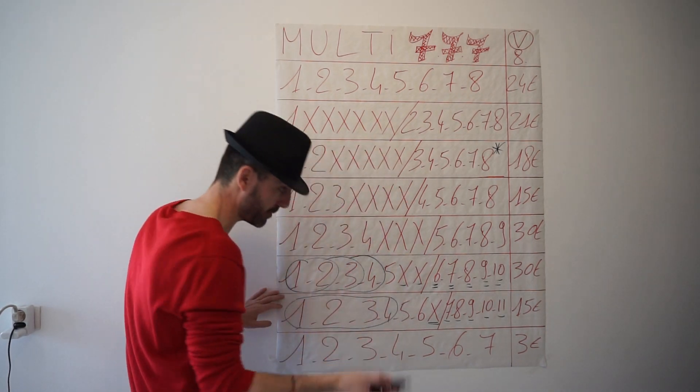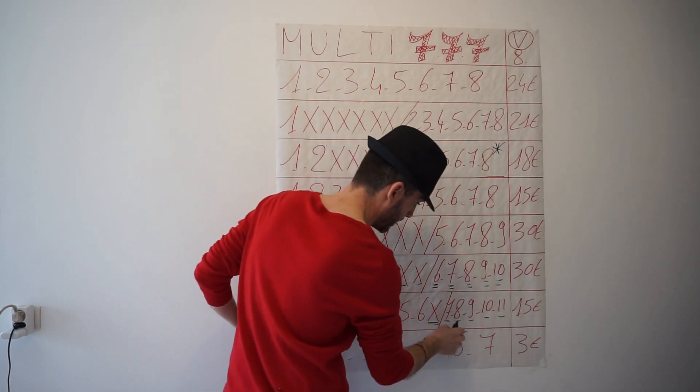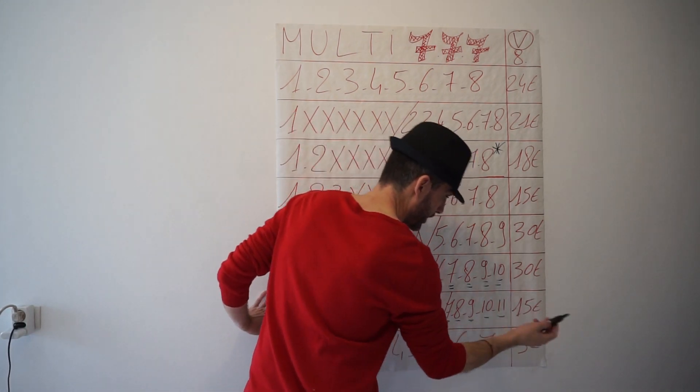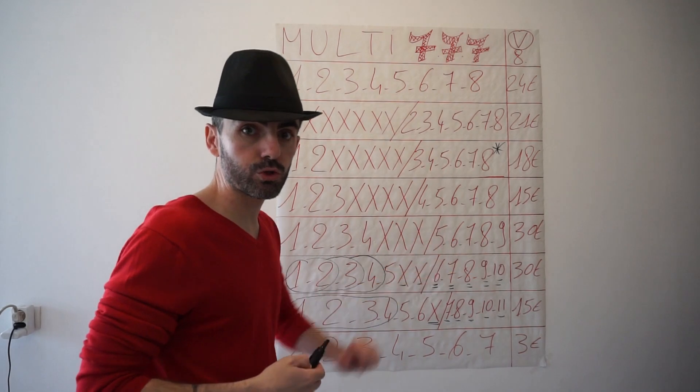Dans la base qui est bonne, nous touchons un, deux, trois, quatre, cinq. Plus on met de chevaux, plus on touche le multi en 7.